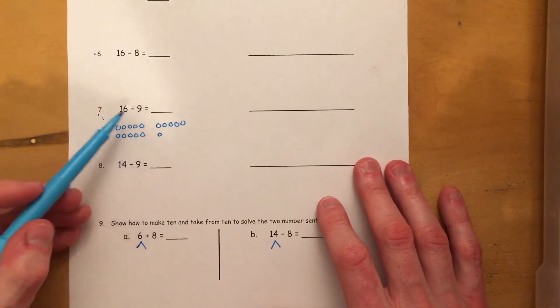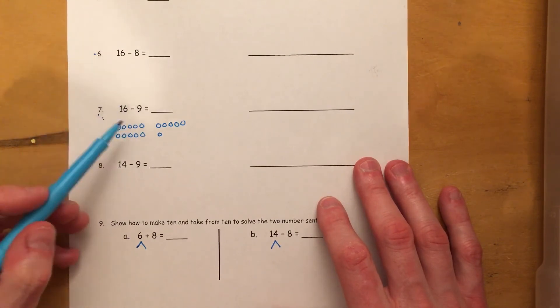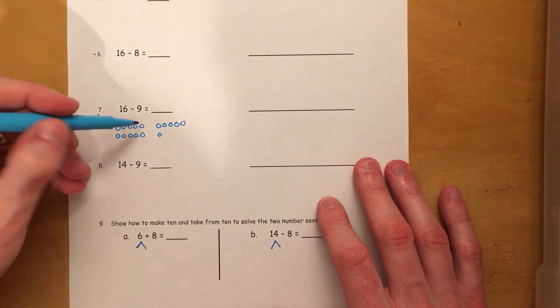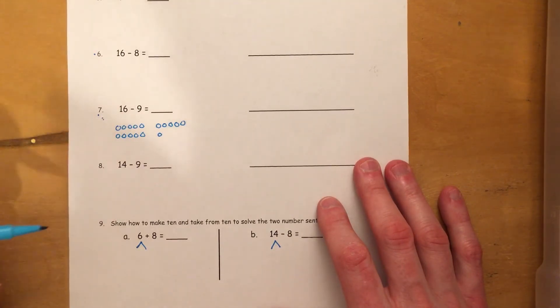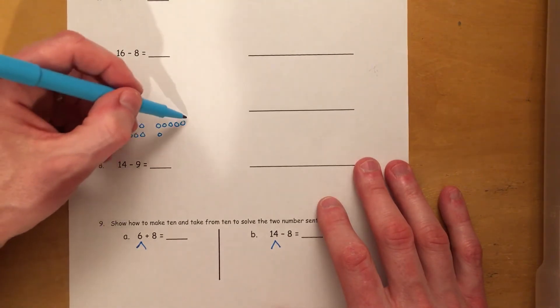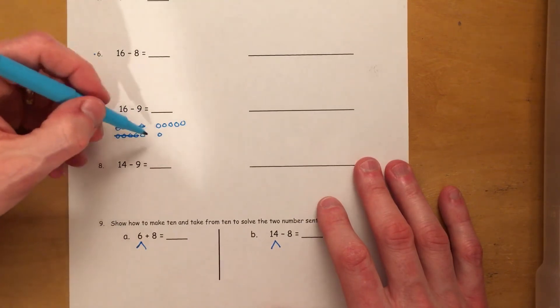And then, here's where you need to be really careful. You need to actually subtract 9. So make sure that you cross out 9 of these.